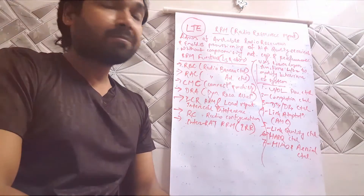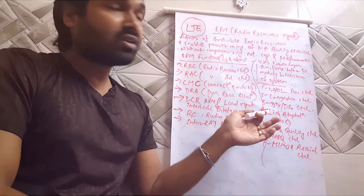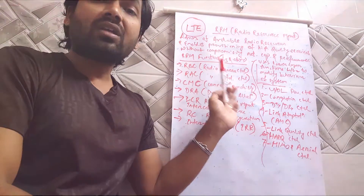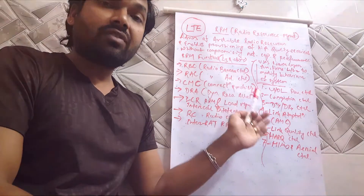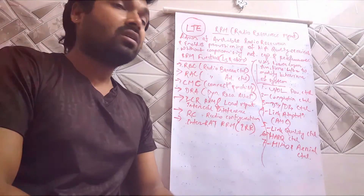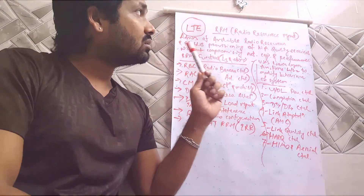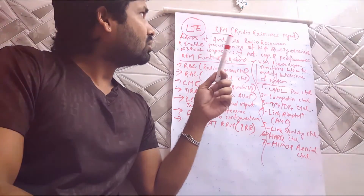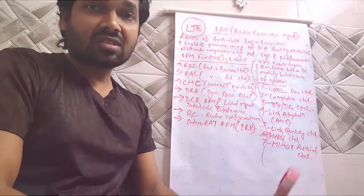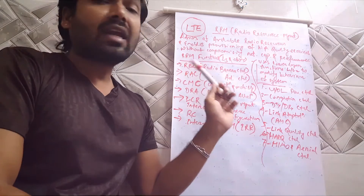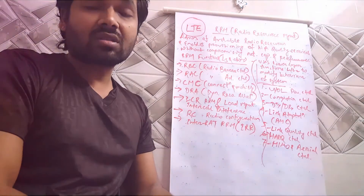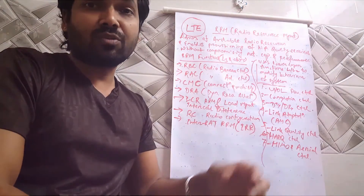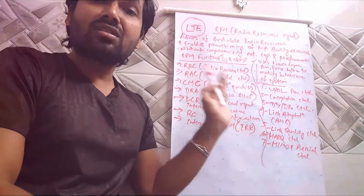We'll also be looking at some lower layer functions — L1 and L2 layers — which affect Layer 3 of RRM to make decisions in terms of modifying the behavior of the LTE system. RRM is basically responsible for the administration of the available radio resources in the Node B or in the network, and enables the provisioning of high quality services without compromising network quality, performance, and capacity.